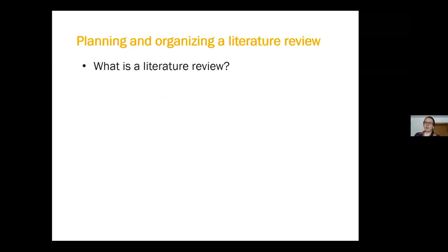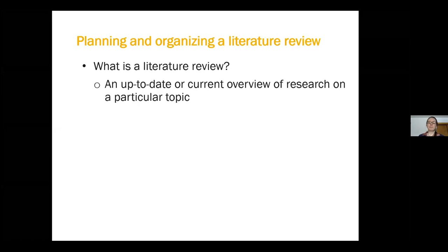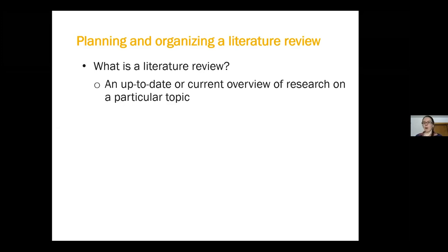So first off, what is a literature review? The most basic summary is that a literature review is an up-to-date or current overview of research on a particular topic. Literature reviews are often found in research articles and conference papers, as well as in theses and dissertations, both at the graduate level and at the undergraduate level. You can also see reviews of the literature in books or book chapters, but they might be called something different. Usually when you see the heading for a literature review, that's something you're finding in a research article or a conference paper.